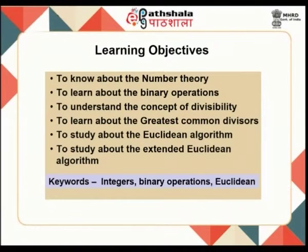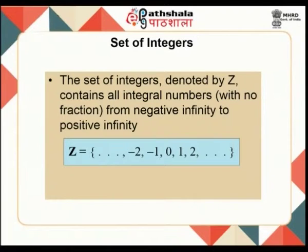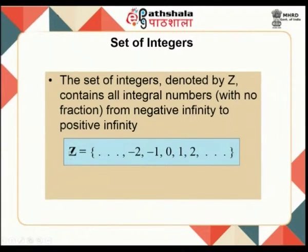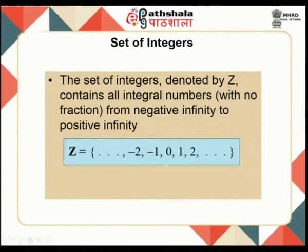The keywords related to this concept are: integers, binary operations, and Euclidean algorithm. Before beginning with divisibility, we need to know what a set of integers is. The set of integers is denoted by Z and contains all integral numbers with no fractions, from negative infinity to positive infinity — that is, Z = {..., -2, -1, 0, 1, 2, 3, ...}.